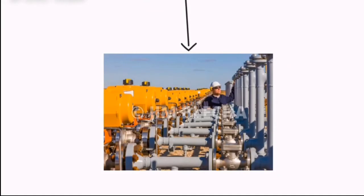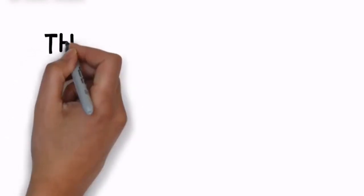There are two headers in place named the production header and test header. The manifold allows smooth diverting between the production and test header in case we need to perform well testing for individual wells. We will talk about well testing in a separate lecture.